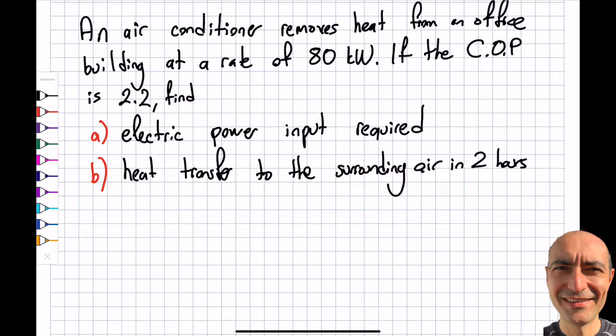In this segment, I want to solve two questions. One question will be from air conditioning/refrigeration, and the second will be for the heat pump, because there are slight differences between the two in terms of the final goal. Let's start with the air conditioning one. An air conditioner removes heat from an office building at a rate of 80 kilowatts.